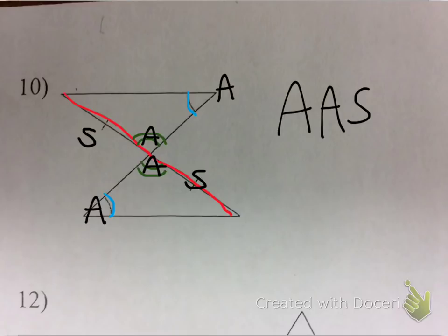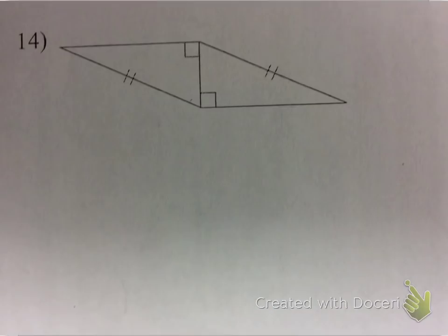The order of the letters reflects that distinction. In ASA, the S is between the two A's. In AAS, the S is not between the two A's. That's how you can differentiate between those two.